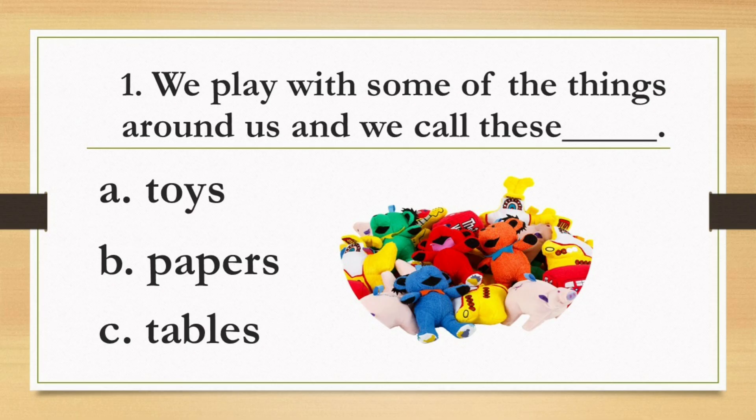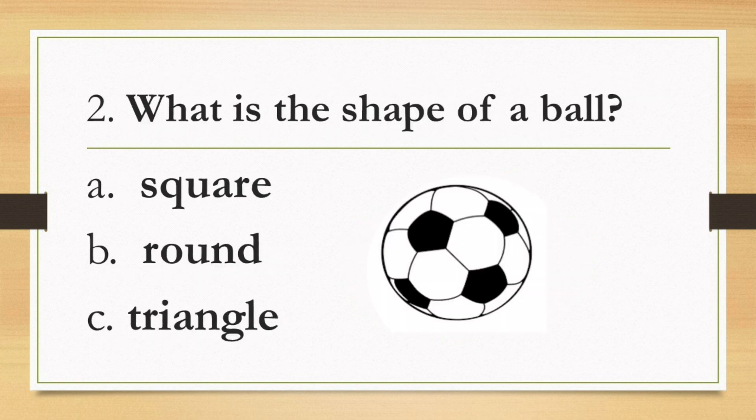Number 1: We play with some of the things around us and we call this blank. A. Toys, B. Papers, C. Tables. Number 2: What is the shape of a ball? A. Square, B. Round, C. Triangle.